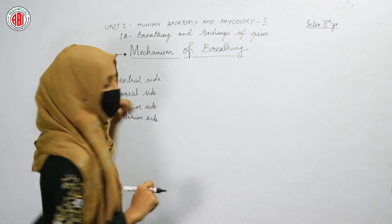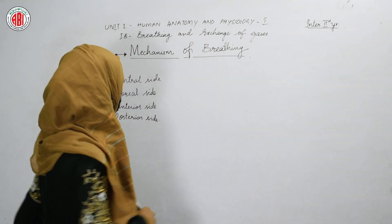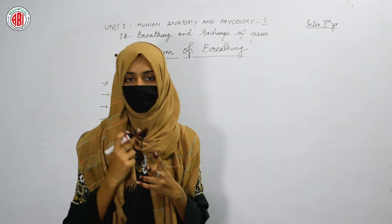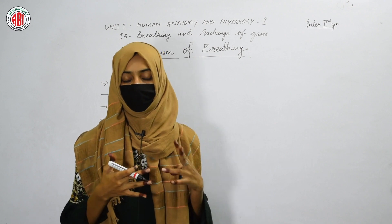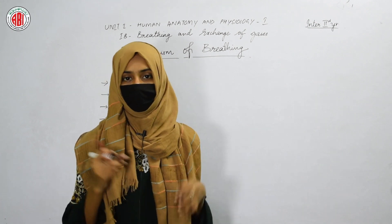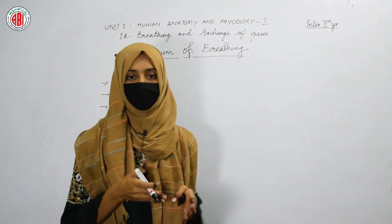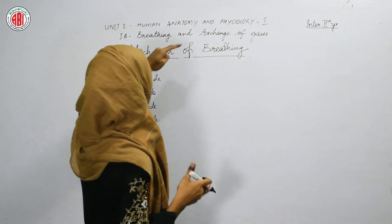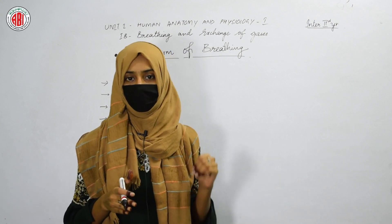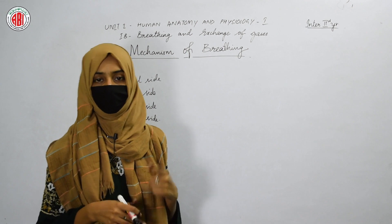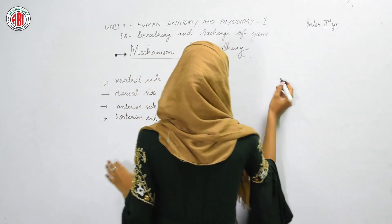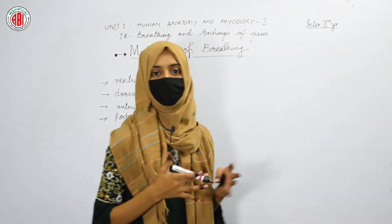These are the four sides of a human body. Now, we all know that our body consists of two main cavities. The upper portion consists of the thoracic cavity and abdominal cavity. We are not going to learn about abdominal cavity because the organs present there are not involved in the process of exchange of gases or breathing. Only the parts present in the thoracic cavity are responsible for respiration.